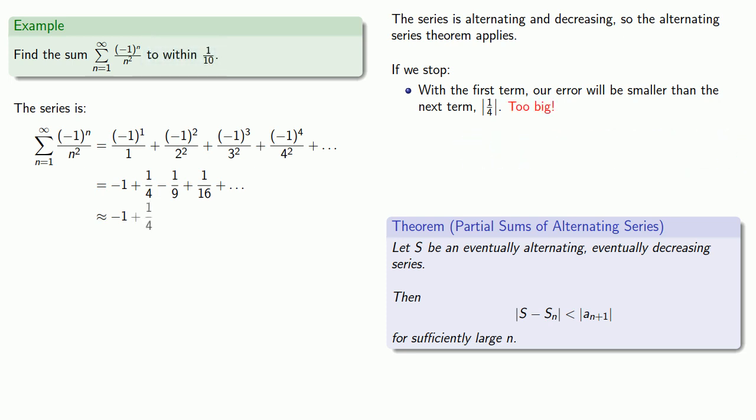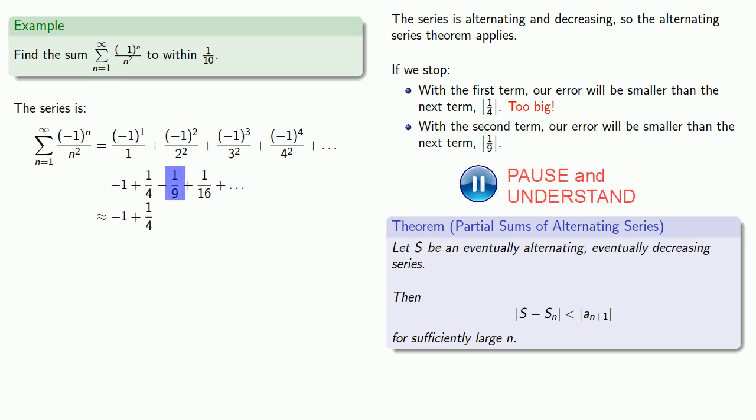So we'll include the second term, and in that case, our error will be smaller than the next term, absolute value of one ninth. That's still too big, so we'll include that term,